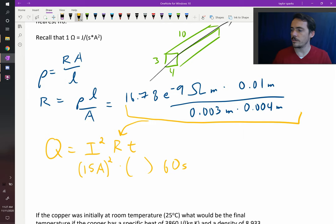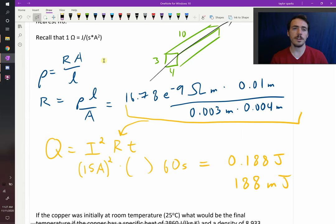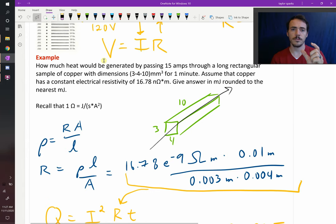When I plug all of that in, and we remember this relationship that one ohm is equal to a joule per second per amp squared, then we end up with our final answer: 0.188 joules. Since it asked for the value in millijoules, we would say that equals 188 millijoules. So that's not a lot of heat. You passed a really high current, 15 amps, for a minute through a sample with some dimensions, and it didn't generate a lot of heat.